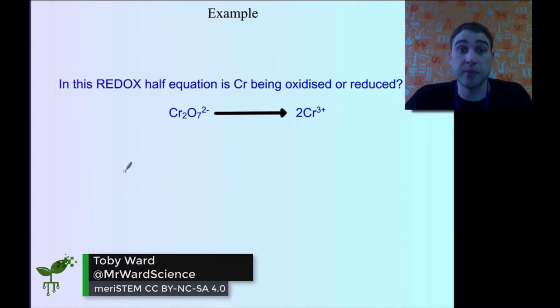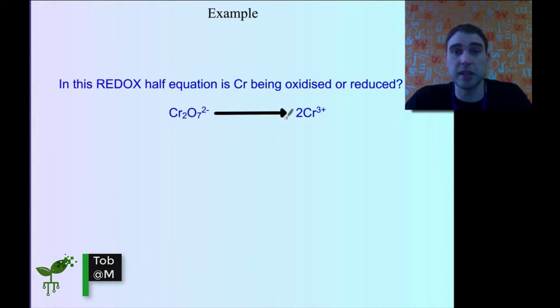Let's look at an example. In this case, we're trying to figure out whether the chromium is being oxidized or reduced. We're going to find the oxidation number of chromium over here and over here.